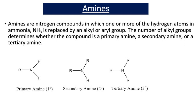In a secondary amine, two of the hydrogens in ammonia are replaced by alkyl groups. And in a tertiary amine, three of the hydrogens in ammonia are replaced by alkyl groups.